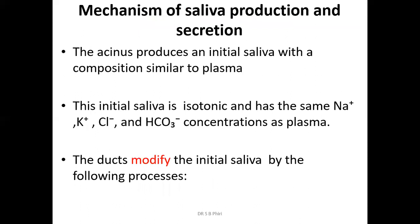Regarding the mechanism of saliva production and secretion: acinar cells produce the initial saliva with a composition similar to that of plasma — this is called isotonic saliva. If a solution has the same osmolality as plasma it is isotonic; greater osmolality is hypertonic; less is hypotonic. The osmolality refers to the number of dissolved particles in solution.